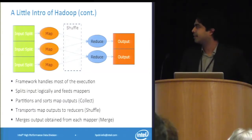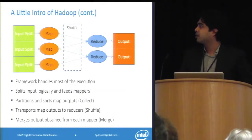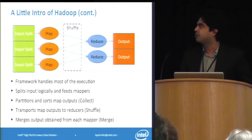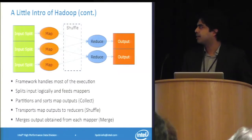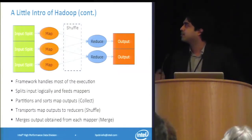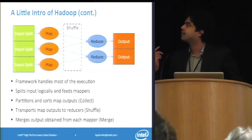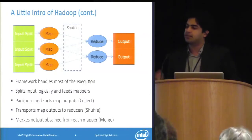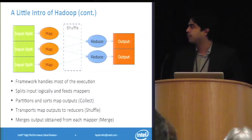This is the basic execution of a typical MapReduce program. The framework splits the inputs logically and feeds each mapper. The mappers process the data, then the framework actually shuffles it. In the shuffle phase, the output of each mapper is sent to the input of each reducer, and finally the reducers give you the output.